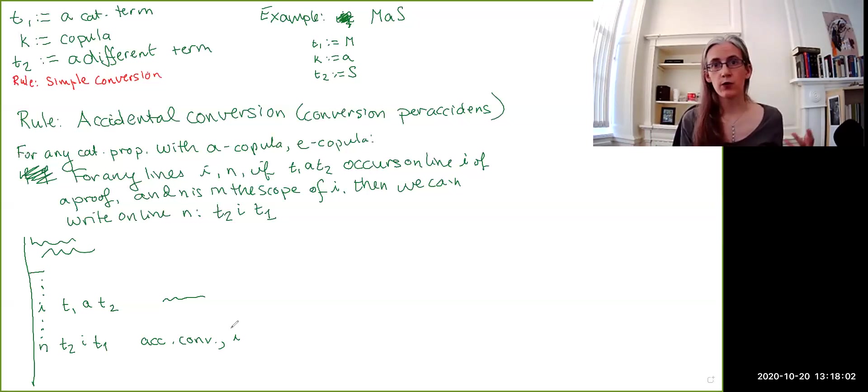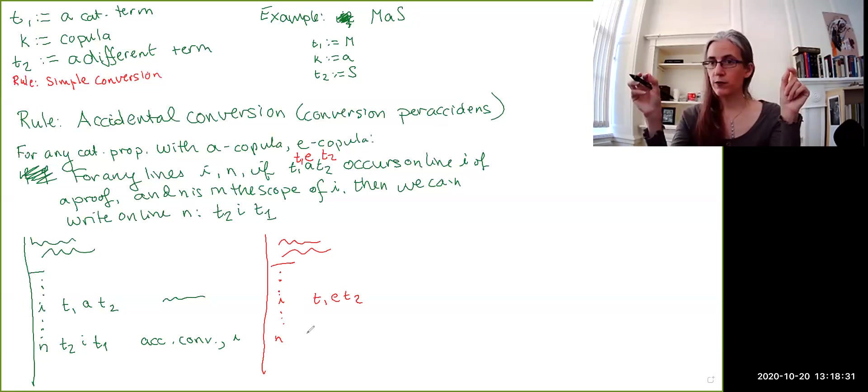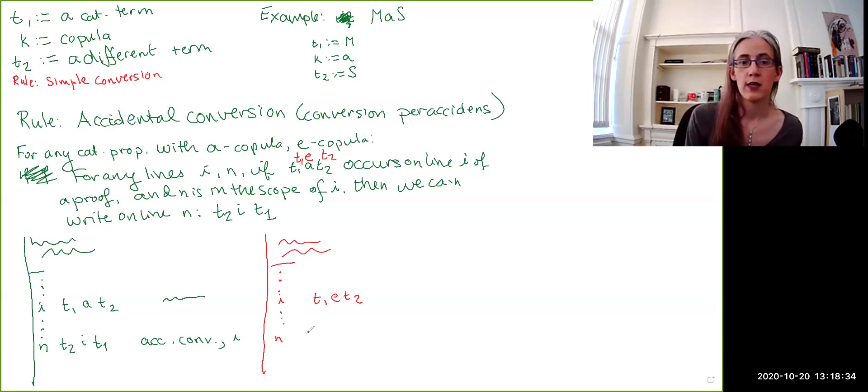The E version of this rule is very similar. But, again, I will write it out in exactly the same way. So, the other version says that if we have T1, E, T2 on line I, so, again, let's draw our kind of general schematic proof. Here we have T1, E, T2. Then, down at line N, we can swap the order of the terms and change from the universal copula to the corresponding partial one. So, that gets us T2, O, T1.